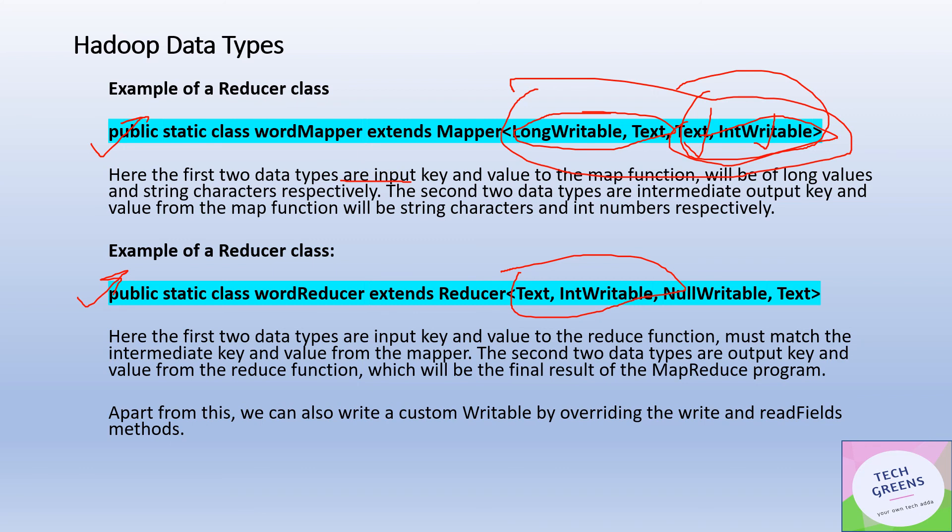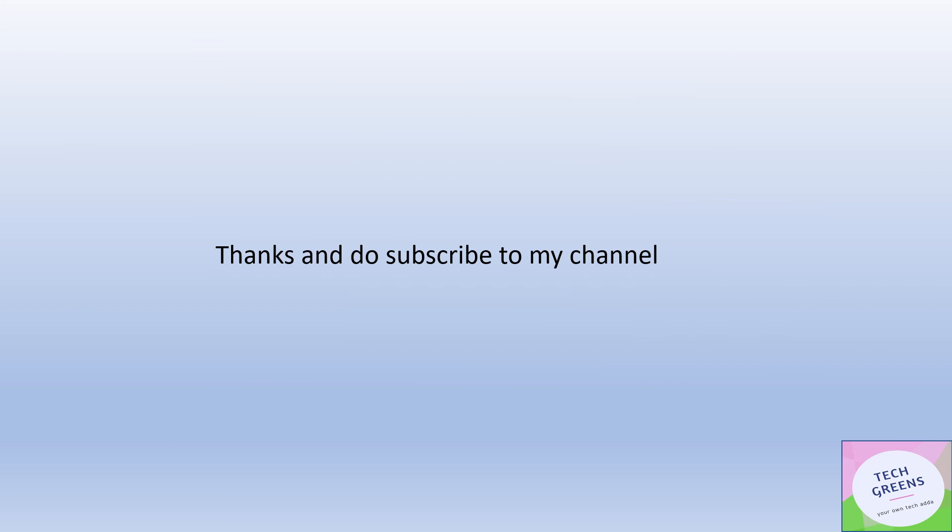To summarize, in this video we covered the writable interface and writable data types in the Hadoop world. Two important points to remember: first, compact serialization provided by Writable; second, random read and write access. These are the two main reasons why we don't use Java data types and Java serialization, and why the concept of Writable was introduced in Hadoop. Thanks for watching — have a great day, keep learning!